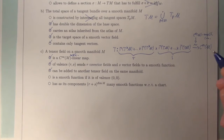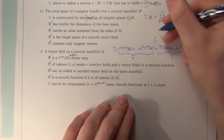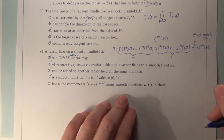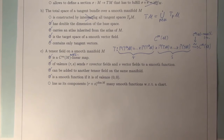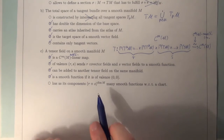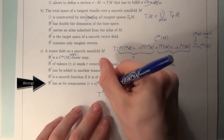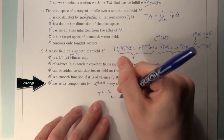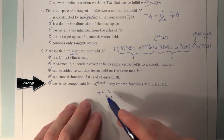A tensor field on M is a smooth function if it is of valence (0,0) — yes, this is true by definition. If r and s are zero, we still have C-infinity of M, which is a smooth function. Regarding components: a tensor field has dim(M)^(r+s) component smooth functions with respect to a chart — not r+s to the dim(M). The component functions t^{i1...ir}_{j1...js} each run from 1 to dim(M), yielding dim(M)^(r+s) in total.